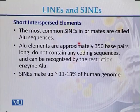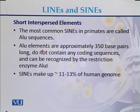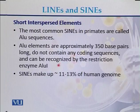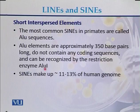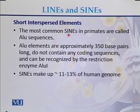The most common SINEs in primates are called ALU sequences. ALU elements are approximately 300 base pairs in size, do not contain any coding sequence, and can be recognized by the restriction enzyme ALU1. That is the reason they are called ALU sequences — because they are identified and recognized by the ALU1 enzyme.